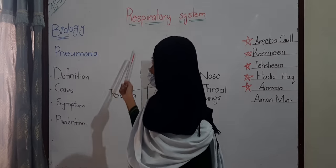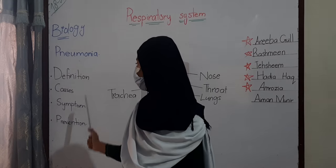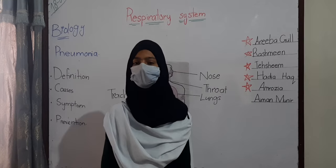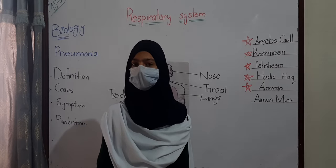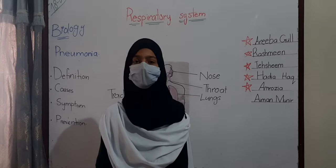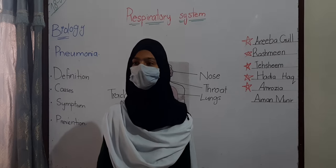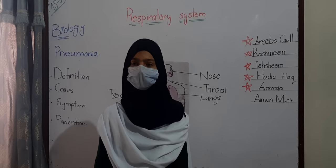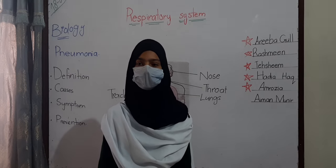Disorders of the respiratory system. Pneumonia. Definition: It is a disease in which the alveoli are filled with pus. Causes: It is caused by bacteria and smoking. Symptoms: Dizziness, fever, and loss of appetite. Prevention: We can prevent pneumonia by using prescribed medicine, eating green vegetables, and taking regular exercise.